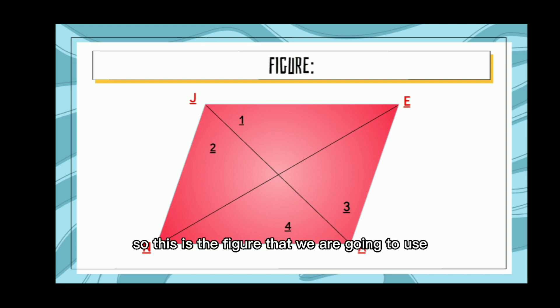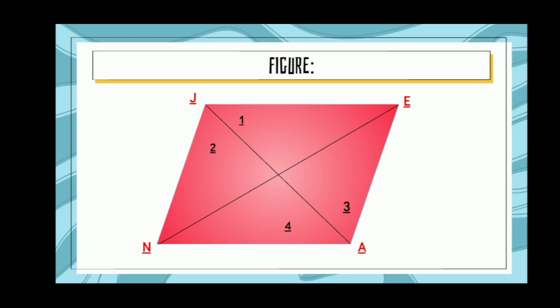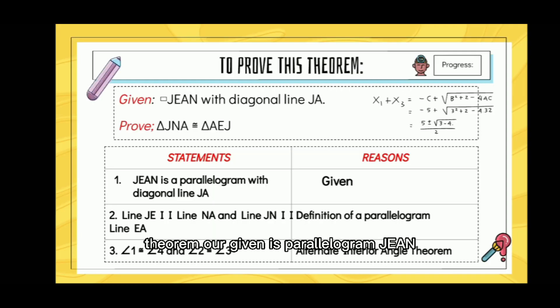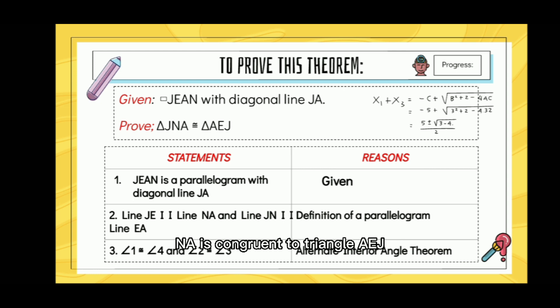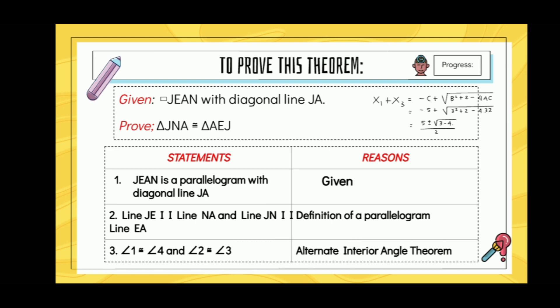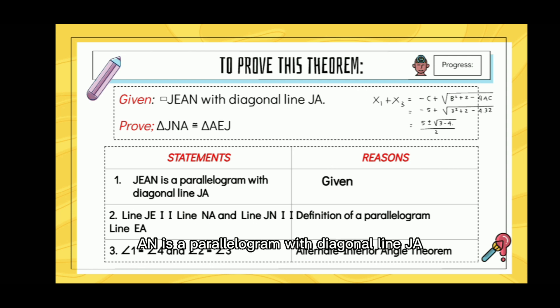This is the figure we are going to use for the next theorems. To prove this theorem, our given is parallelogram JEAN with diagonal line JA. We are going to prove that triangle JNA is congruent to triangle AEJ using two-column proof. Our first statement is: JEAN is a parallelogram with diagonal line JA. The reason is given.